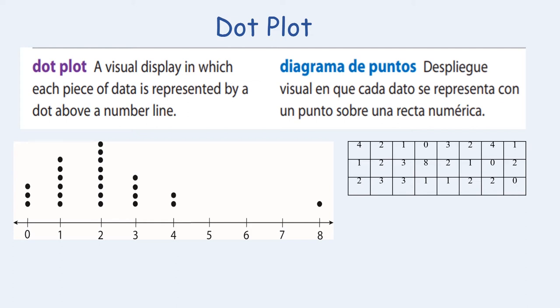As a visual representation I can easily identify that five, six, and seven does not occur in my table and that eight only occurs once. Dot plots are a data display that highlight the frequency of data.